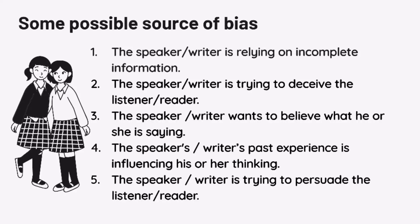Here are some possible sources of bias. 1. The speaker or writer is relying on incomplete information. 2. The speaker or writer is trying to deceive the listener or reader. 3. The speaker or writer wants to believe what he or she is saying. 4. The speaker or writer's past experience is influencing his or her thinking. 5. The speaker or writer is trying to persuade the listener or reader.